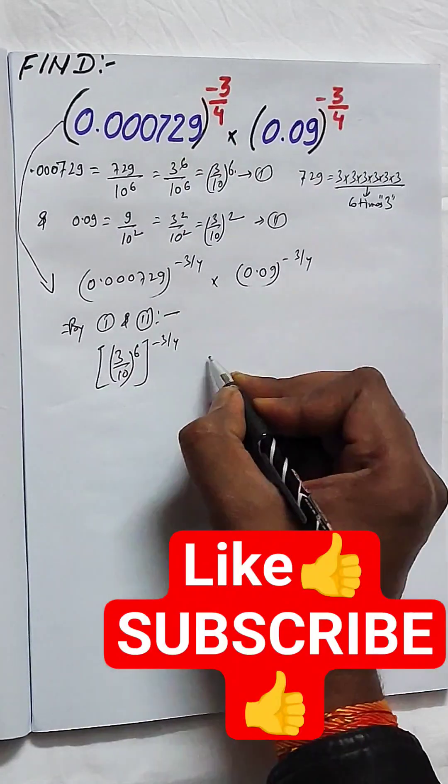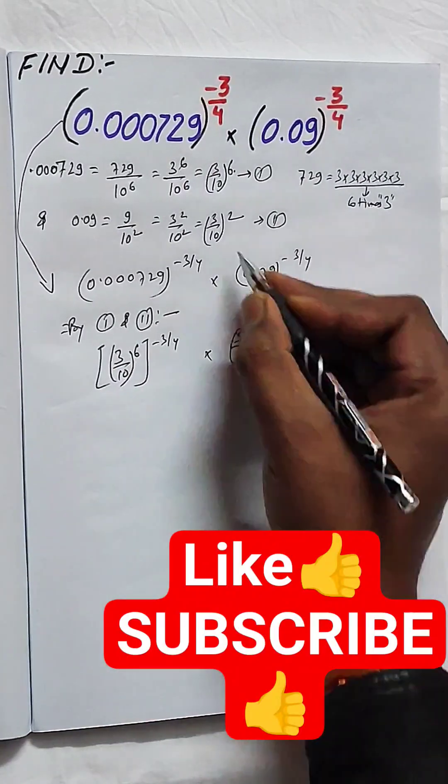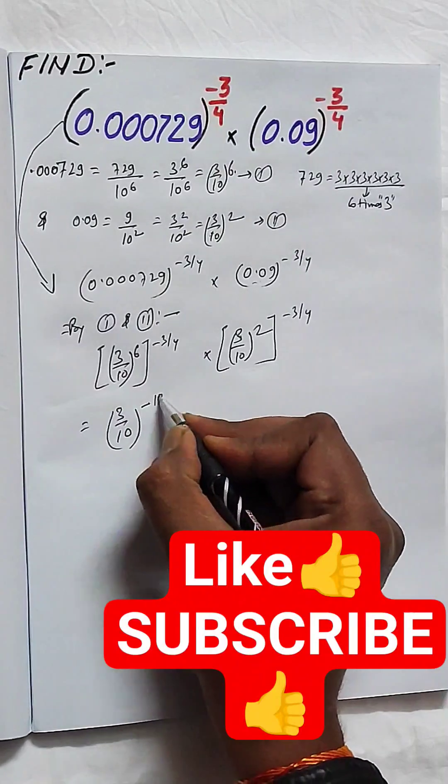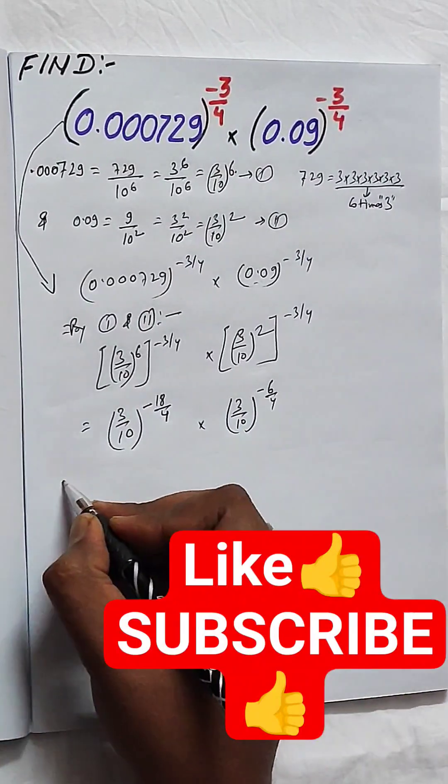Now when we multiply it, you can put the value in place of the first braces as (3/10)^6 and in place of the second braces (3/10)^2.